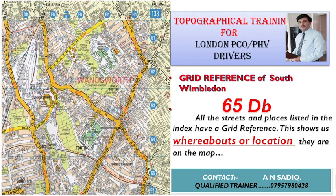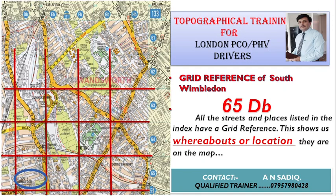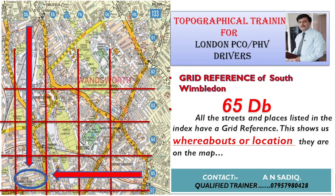Now we will find the grid reference of South Wimbledon. We will go to the street map page and try to find South Wimbledon — it is highlighted here in blue color. These are the square boxes, which are in white color. The corresponding number is 65 and the letter is DB. So the grid reference is 65 DB — the number is written first, followed by the letters.